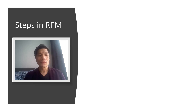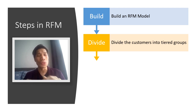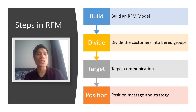After looking at RFM, let me explain the four steps to do RFM. First, build an RFM model. Next, divide the customers into tiered groups using RFM scoring. Then target communications based on these tiered groups. And finally, position your message and strategy for the different tiered segments.